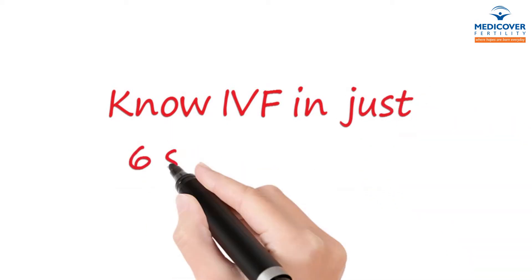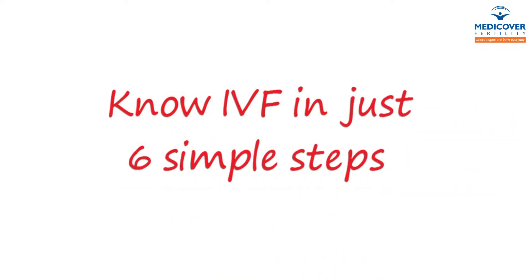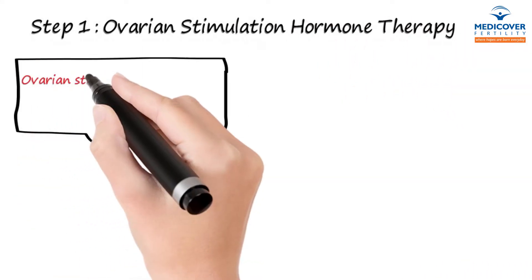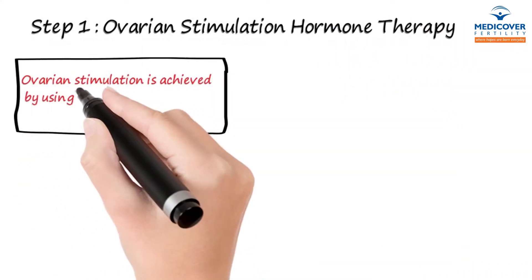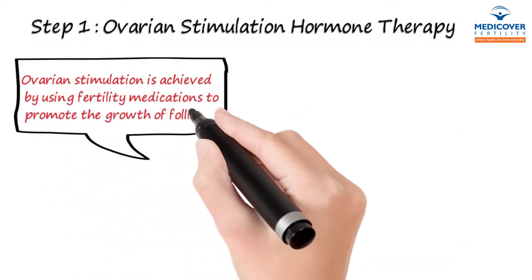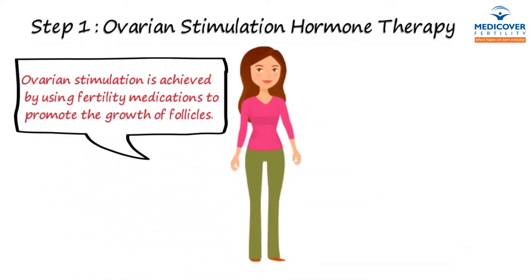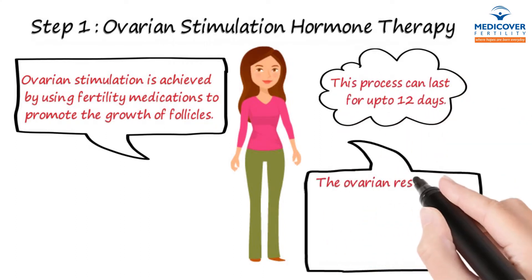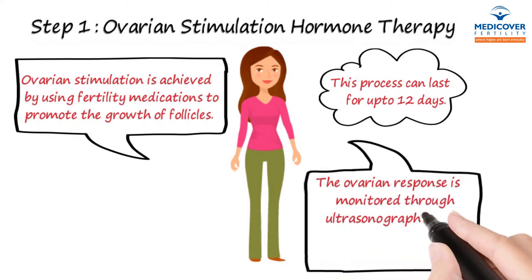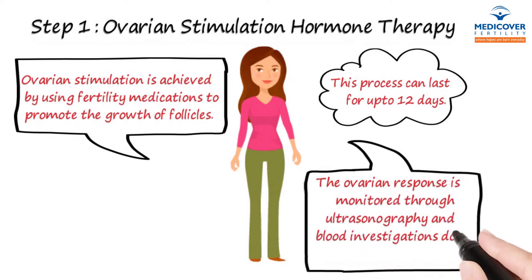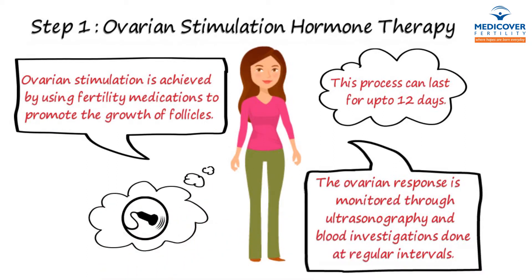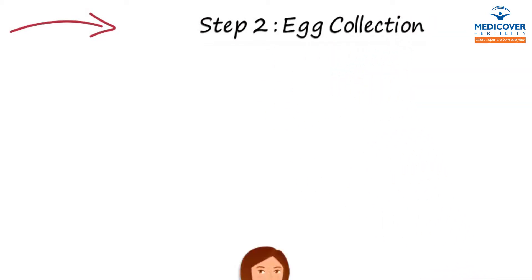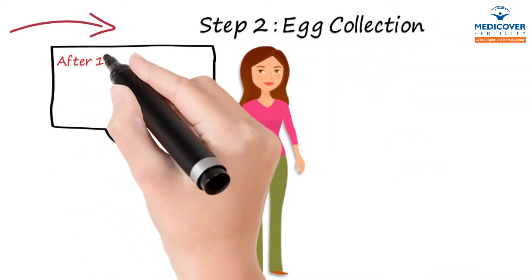Step 1: Ovarian stimulation. Hormone therapy is used to promote the growth of the follicles. This process can last for up to 12 days. The ovarian response is monitored through ultrasonography and blood investigations done at regular intervals.